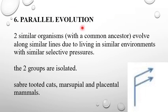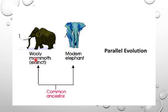Now, the sixth one is parallel evolution. Two similar organisms with common ancestor evolve along similar lines due to living in similar environments with similar selective pressure. The two groups are isolated. Saber-toothed cats, marsupials and placental mammals are the examples. In this diagram, you can see the woolly mammals that have now became extinct and the modern elephants have a common ancestor. The ancestor for both of these is common. This is an example of parallel evolution.